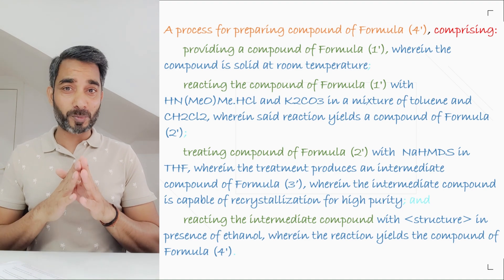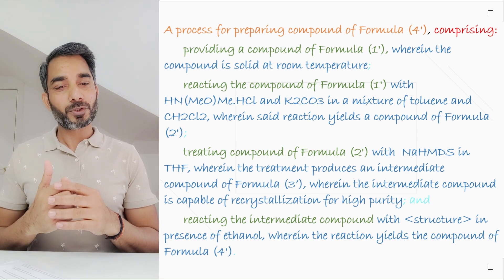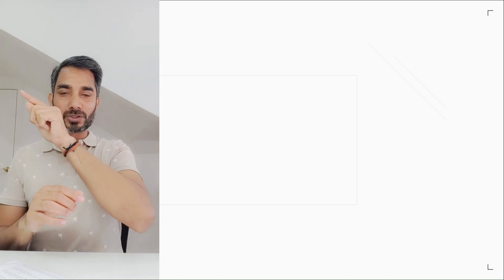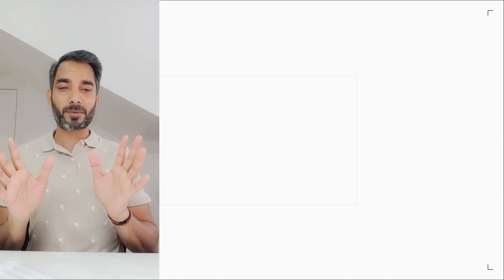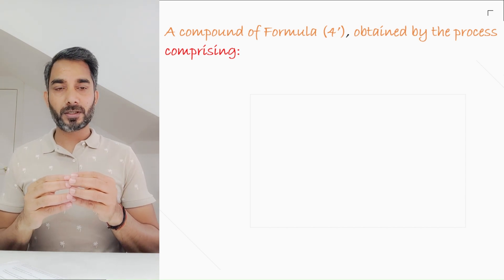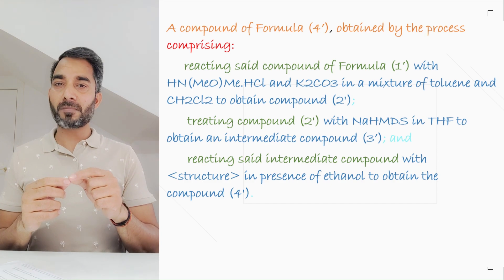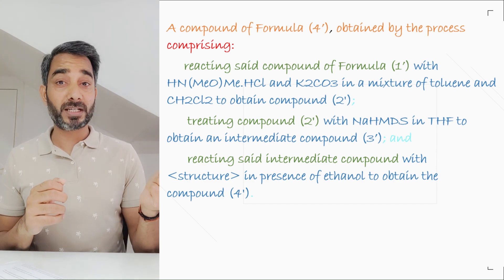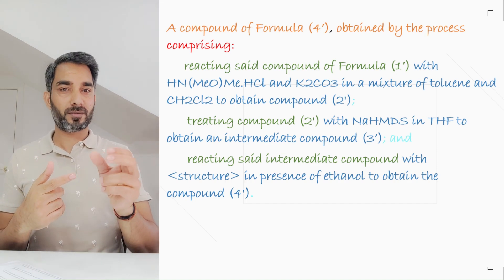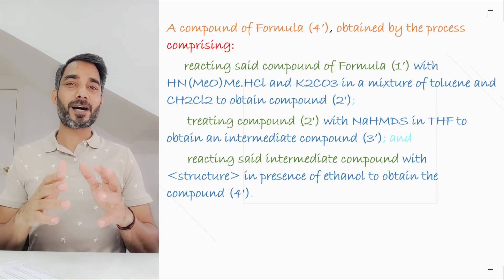I'm not sure how good my version of the claim was, but you get the gist. They have also asked about a product version. Usually when you have been given a structure of a compound, you write the definition of the structure including R groups, H, and so on. But in this case, I would write a product-by-process kind of a claim: a compound of formula 4 obtained by the process comprising — reacting compound of formula 1 with the mixture, treating compound 2 with NaHMDS in THF to obtain compound 3, and reacting compound 3 with the particular element provided in presence of ethanol to obtain compound 4. This gives us our product-by-process claim, so we have both versions: process and product.